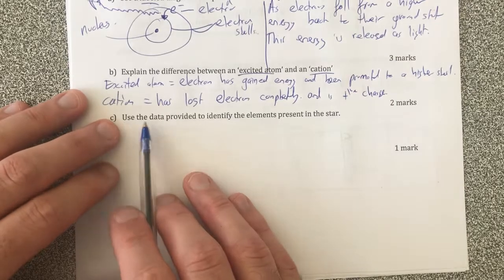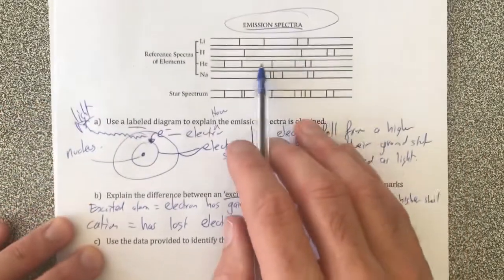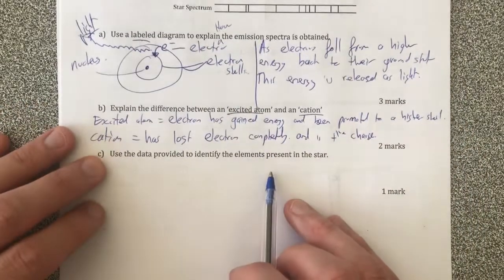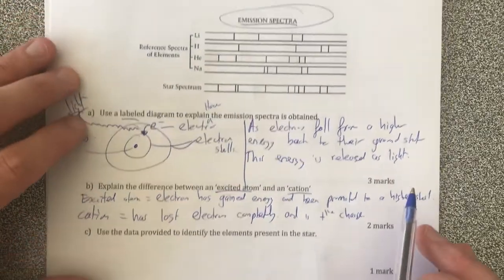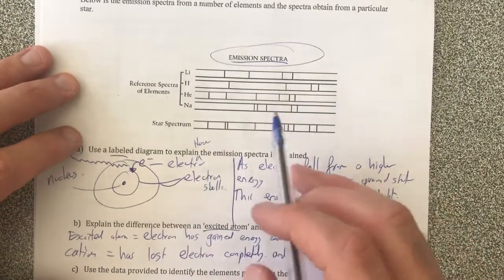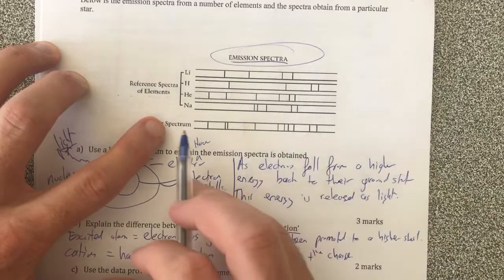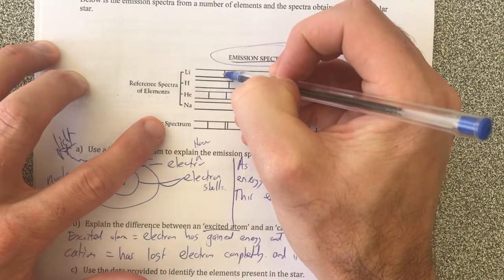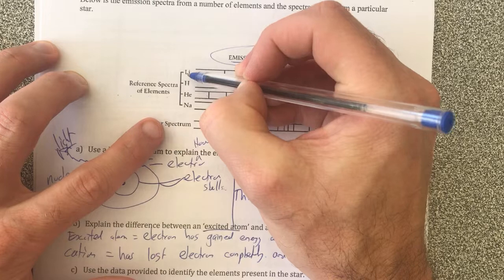Lastly, we need to use the data in this spectrum here to identify what elements are present in the star. So let's have a look at this. What we need to do is know that these wavelengths of light represent the element.